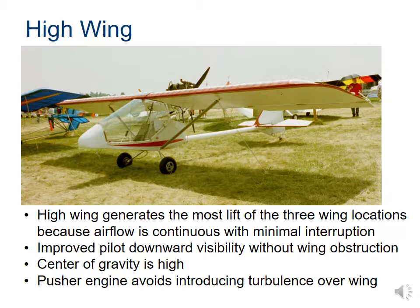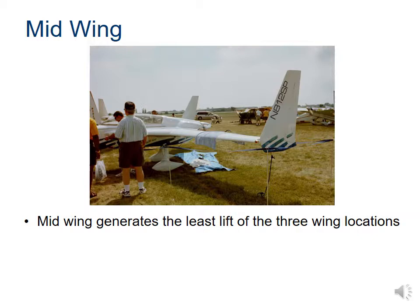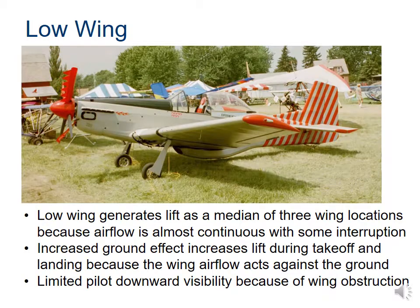The high wing has the most lift. Because the wing is above the cockpit, the pilot is able to see best with no obstruction. The center of gravity is higher, and this avoids turbulence over the wing. The mid wing has the least lift of the three positions but is great for aerobatic aircraft since it gives equal lift whether upside down or right side up. The low wing has a median amount of lift and some extra ground effect — a little extra lift coming straight off the ground because airflow acts against the ground.